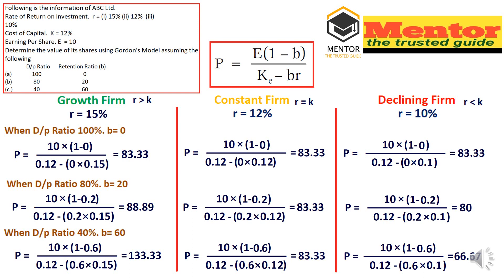In situation 3 where ke > r = 10% (declining firm), the argument is that instead of keeping money in the business — since the return r is less than the cost of capital ke — the firm should withdraw money so investors can utilize it in other projects. Here, as the payout ratio decreases, the share value also decreases: P = 83.33 at 100% payout, P = 80 at 80% payout, and P = 66.67 at 40% payout.